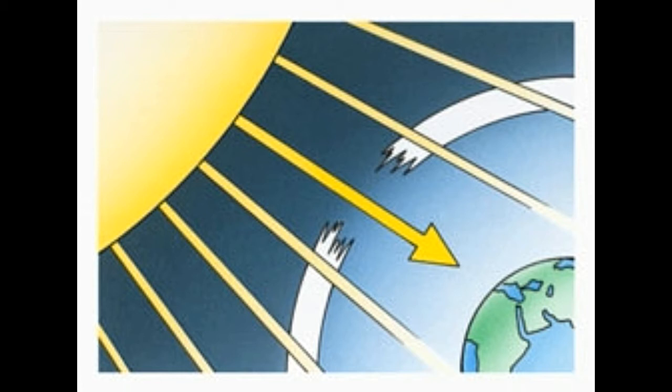This layer traps harmful ultraviolet B-UVB radiation emitted by the sun and hence, plays a crucial role in supporting life on the planet.